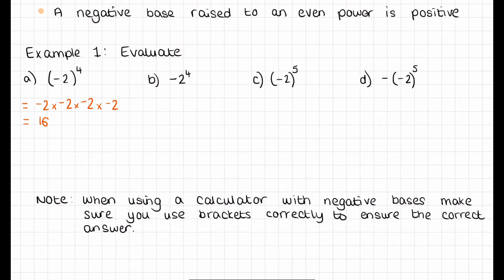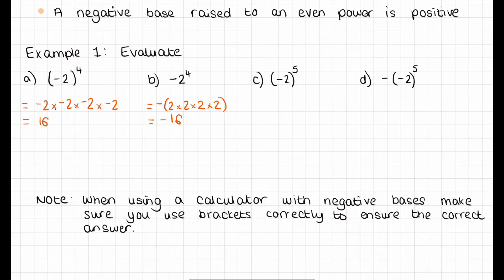Now with this next one, we have to be really careful. When using a calculator, if your base is negative, make sure you put brackets around it, or use your brackets correctly, because otherwise your calculator will give you a different answer — it uses order of operations. So with part B, we have negative 2 to the power of 4. Because negative 2 is not in brackets, order of operations says we do the power first. So this will actually be negative, then 2 times 2 times 2 times 2, which gives us negative 16. Students will often forget to put the bracket around the negative 2, so they'll get negative 16 when the answer should be 16.